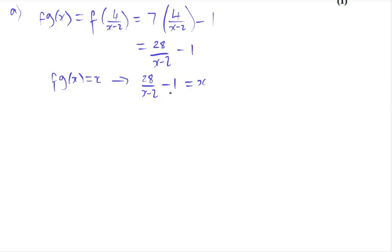To solve this equation we move the one to the other side. 28 over x minus 2 equals x plus 1. Cross multiply with the x minus 2. So 28 equals x plus 1 times x minus 2. Expand the brackets to get x squared minus x minus 2 equals 28.